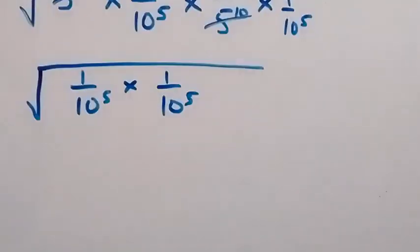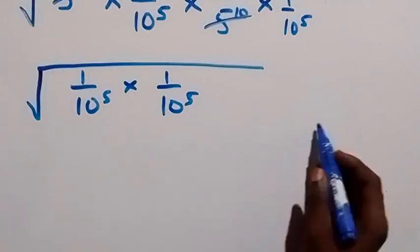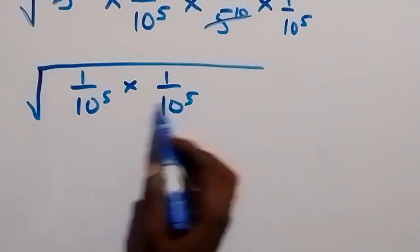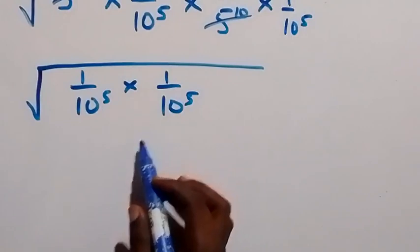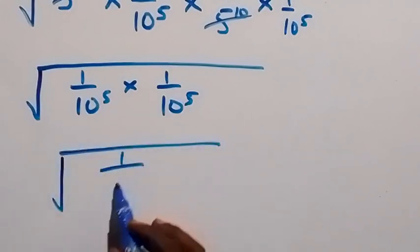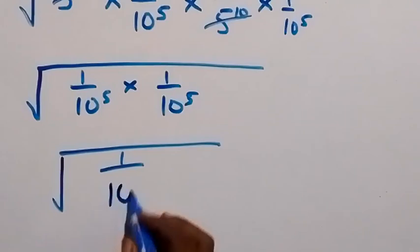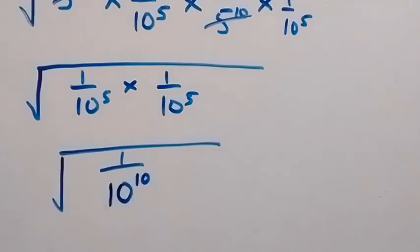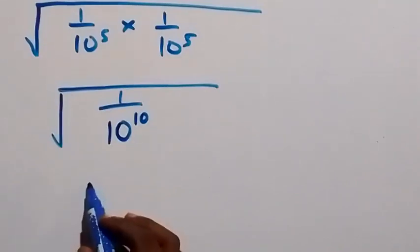From here, the denominators are having the same base, and that means by the law of indices we can add the powers. Then this will now be square root of 1 over 10 raised to power 10. We have 1 over 10 raised to power 10, which is the same as writing it as square root of 1 over 10 raised to power 10.